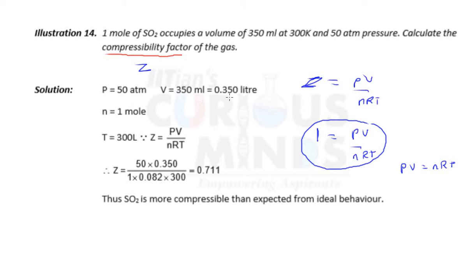Pressure is given, volume is given. Pressure in atm, volume in liters. If you take in atm and liters, the value of R is 0.082. Temperature always in Kelvin, and it is given in Kelvin. So now P times V upon nRT. N is given as 1 mole. I'm solving the answer as 0.711.